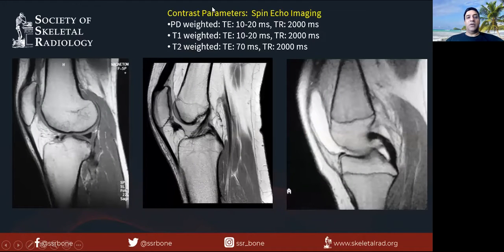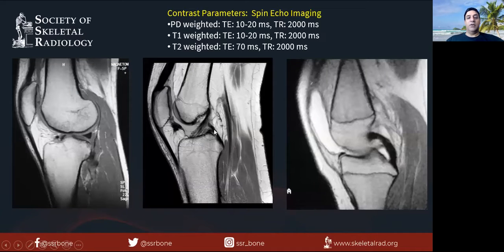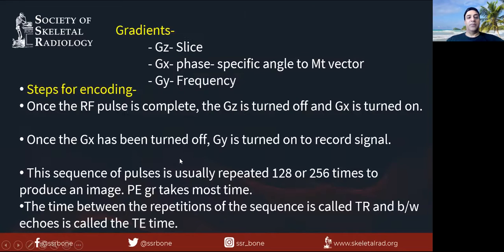Spin echo images come in three flavors. They can be T1-weighted, where the fluid is dark; T2-weighted, where the fluid is bright; or proton density in between, where the fluid is gray. This grayish proton density image actually has the best SNR and looks pretty good.